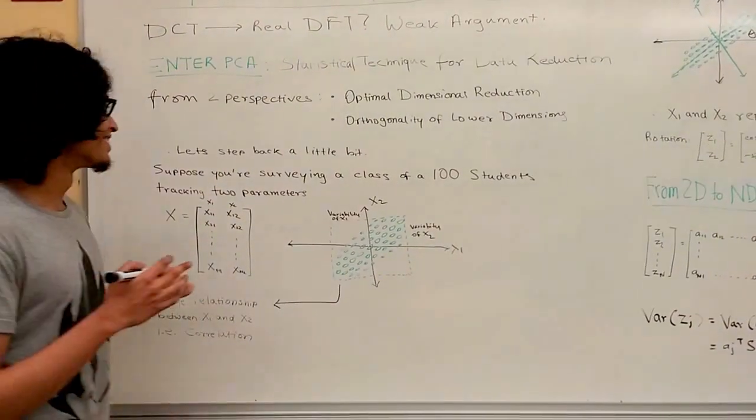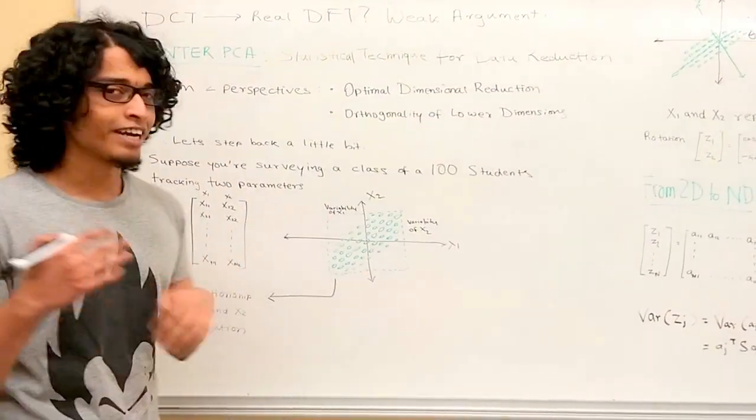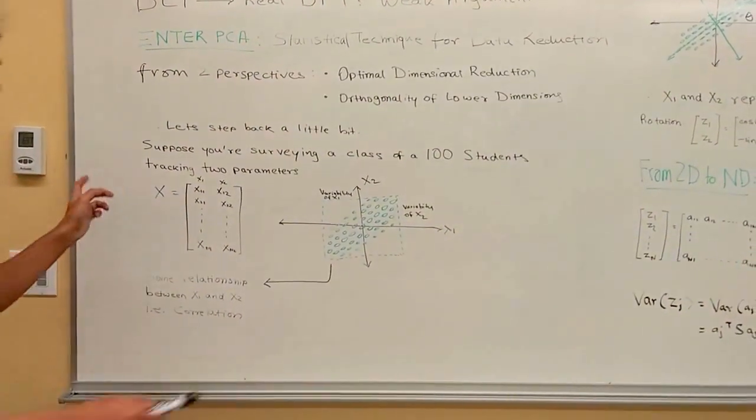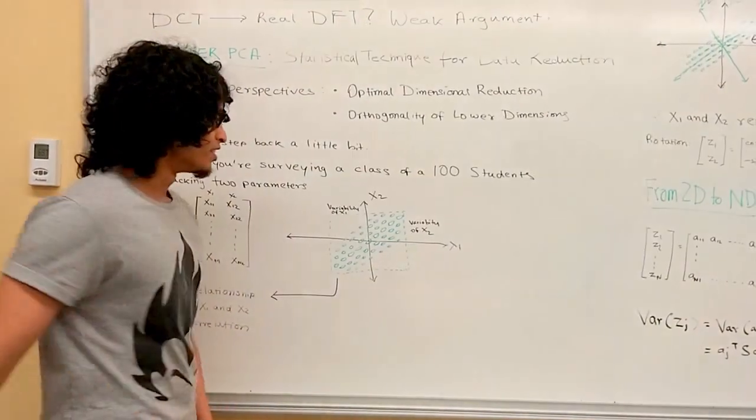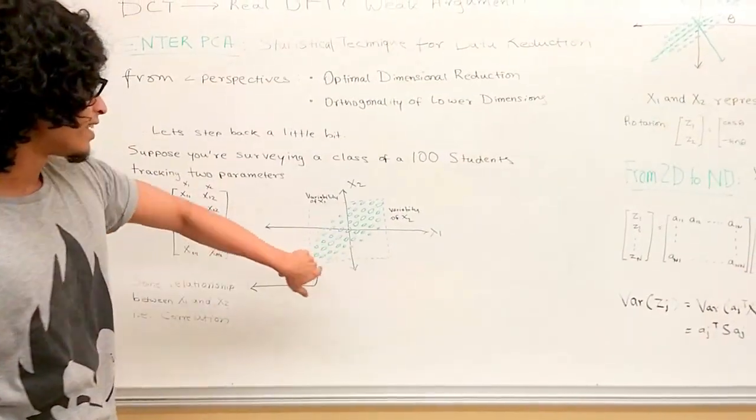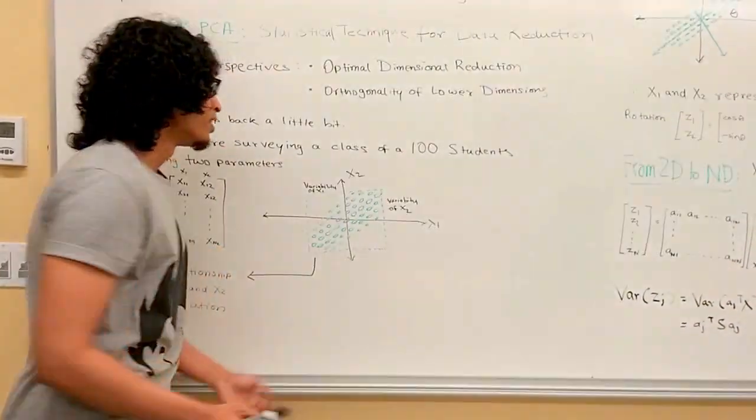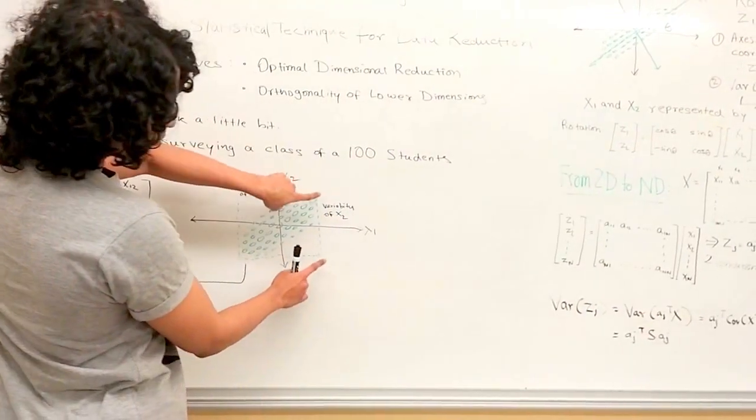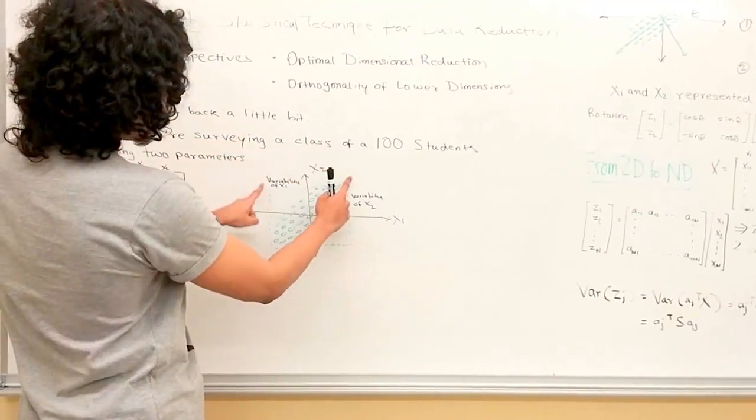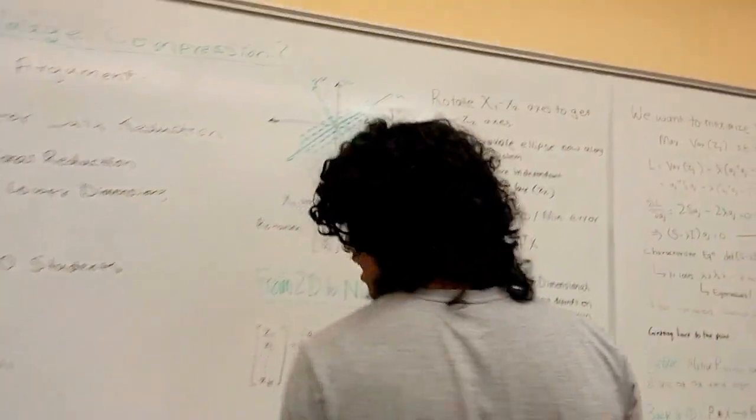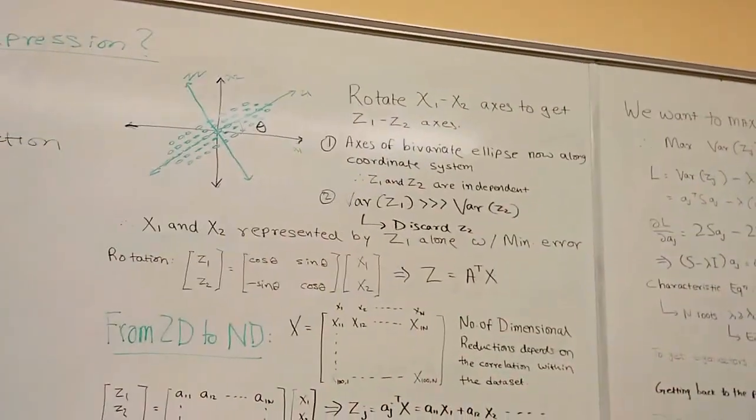Suppose you're surveying a class of 100 students and you're tracking two parameters per student. Your data matrix looks something like this. You decide to plot that into dimensional space and you get a bivariate ellipse. You notice that there's a linear positive relationship between x1 and x2 - they're pretty highly correlated. You also notice that the variability of x2 and variability of x1 is quite large.